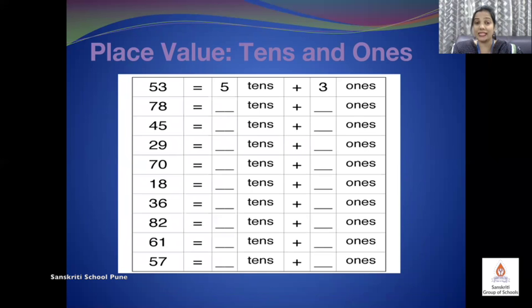Now it's time to do place value. That is write tens and ones for the given number. The number is 53. So we are supposed to write how many tens and how many ones. So in 53, there are 5 tens. 5 tens means? Very good. 5 tens means 50. And how many ones are there? 3 ones are there. In the same way, we will do for rest of the numbers.